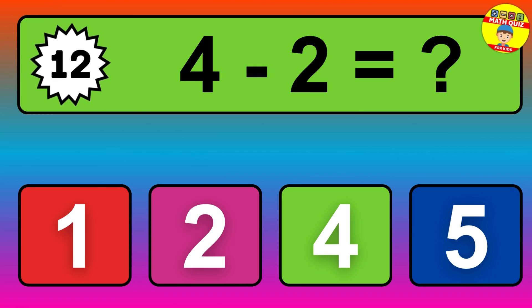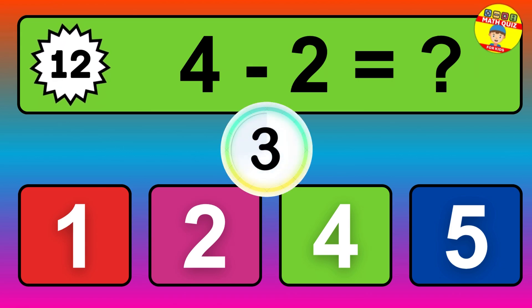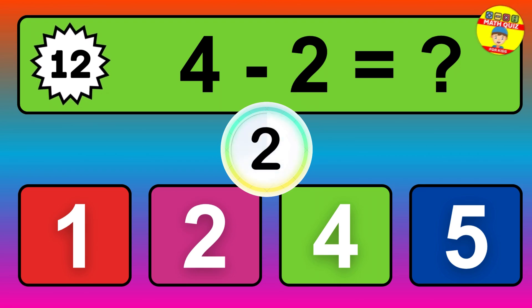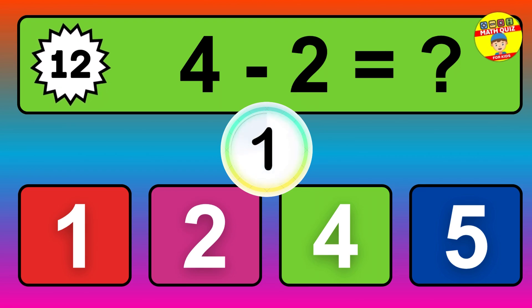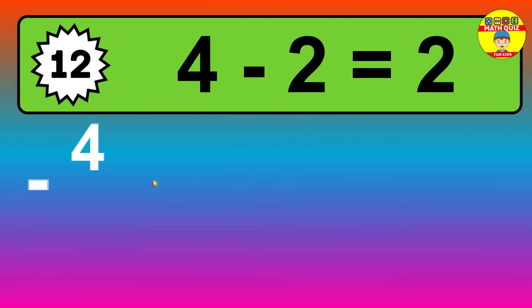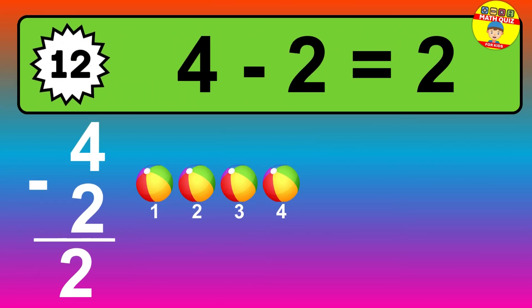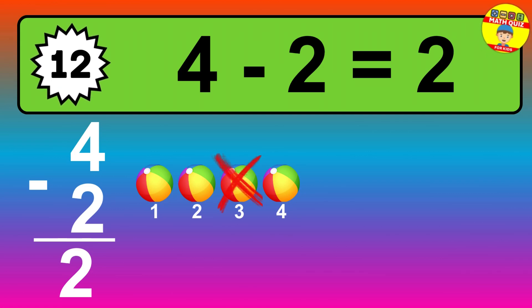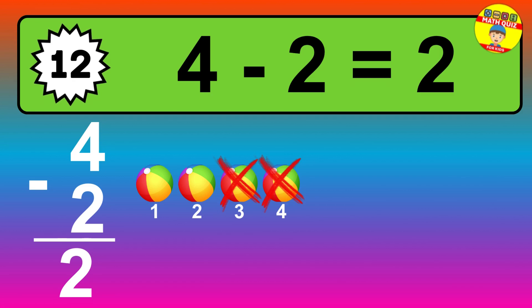Question twelve: four minus two equals what? So the answer is four minus two is two. Let's count it: one, two.